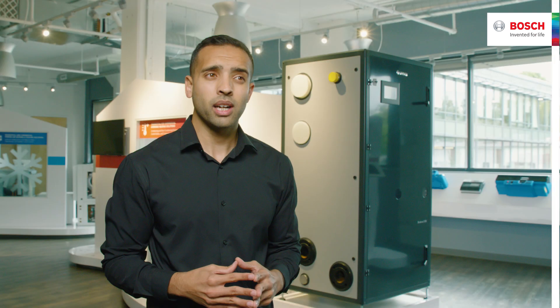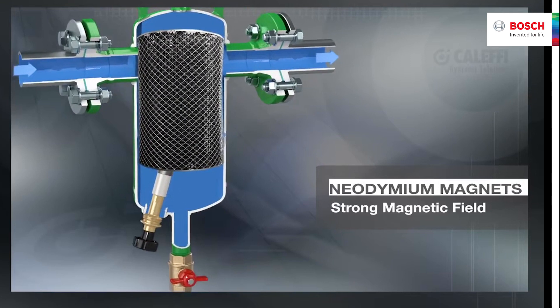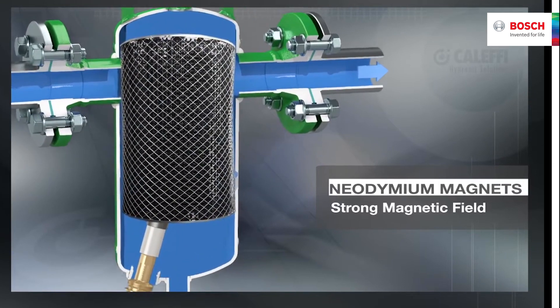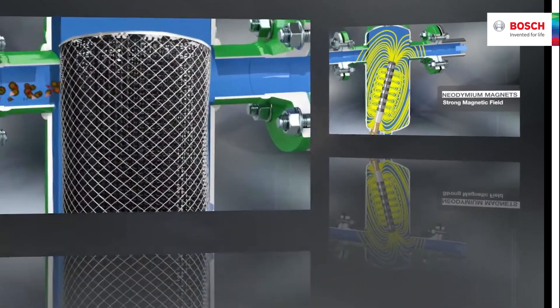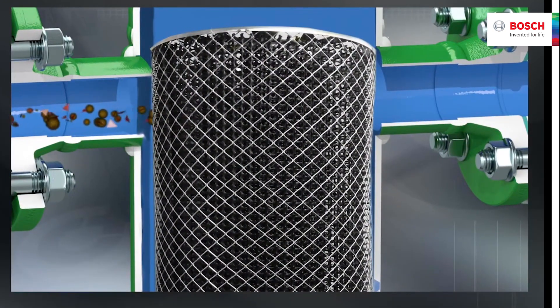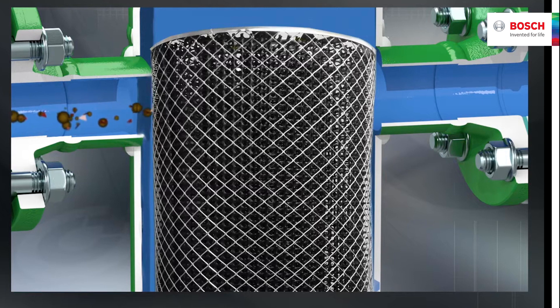The SSP Low Loss Header has two and a half times the ferrous impurities removal performance of standard air and dirt separators. We incorporate a powerful removable rare earth magnet just below the flow line to capture ferrous particles. This causes no added system pressure drop since the magnet is positioned outside the flow path.